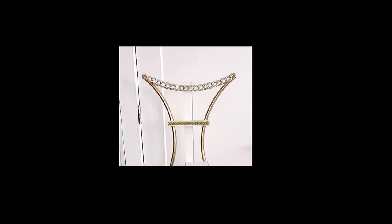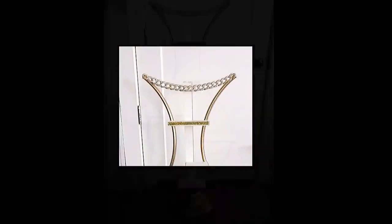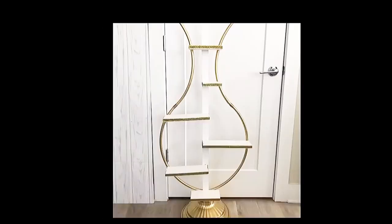I cover the openings on the hoops with gems, and then I use this golden chain as the lip for the vase. I then added gold trim to the edges of the shelves.